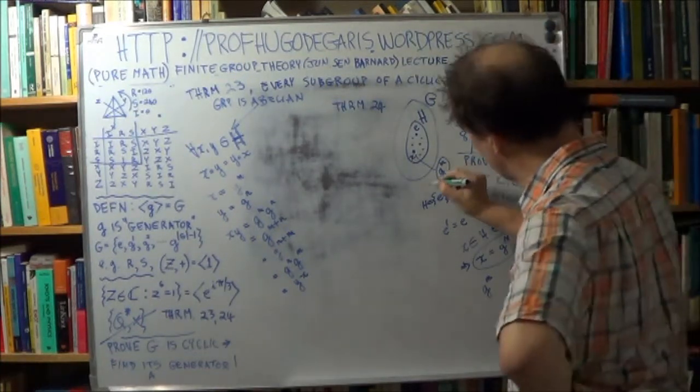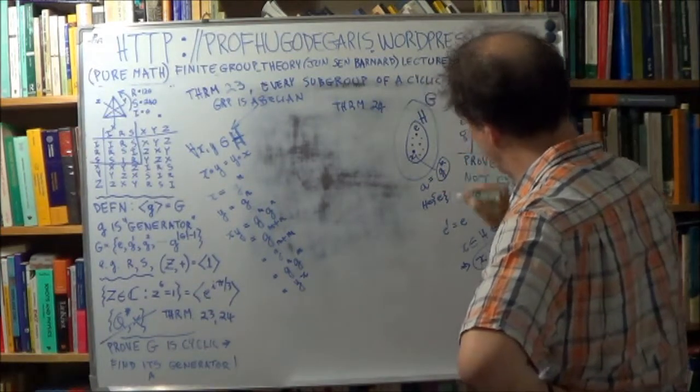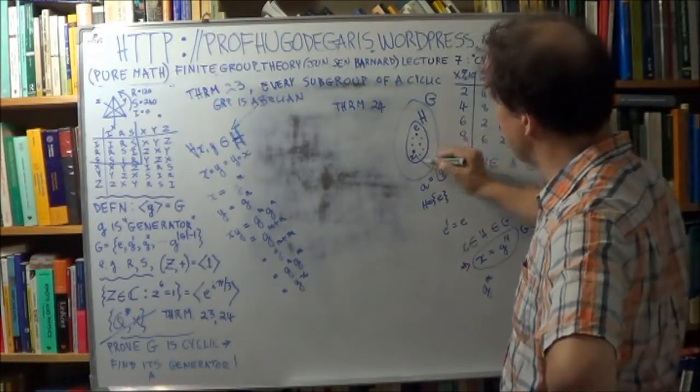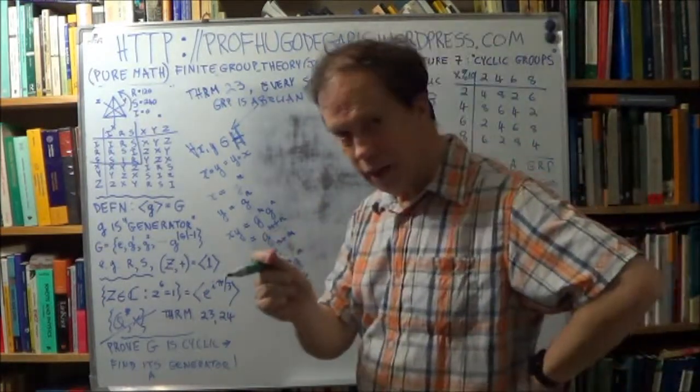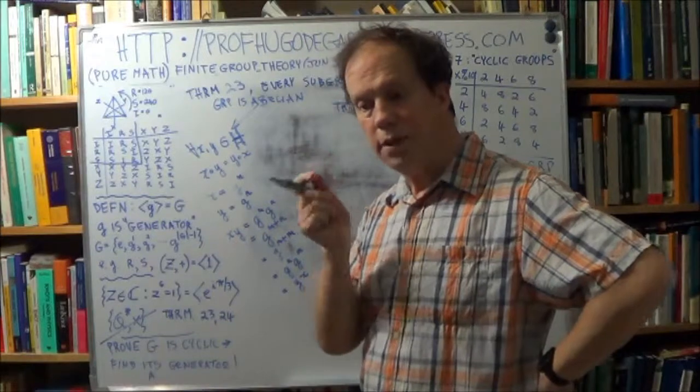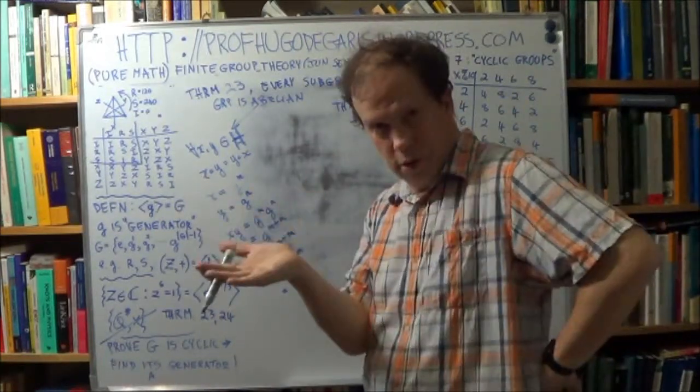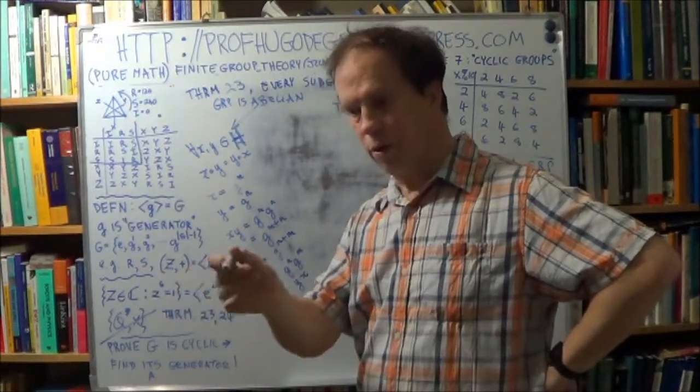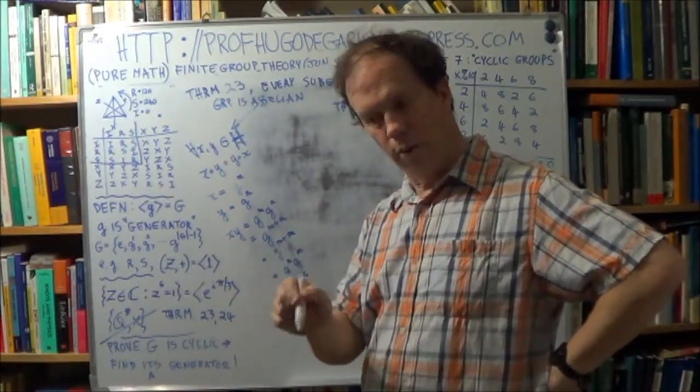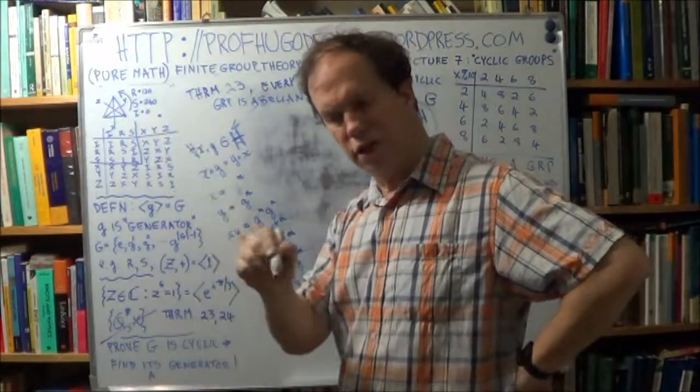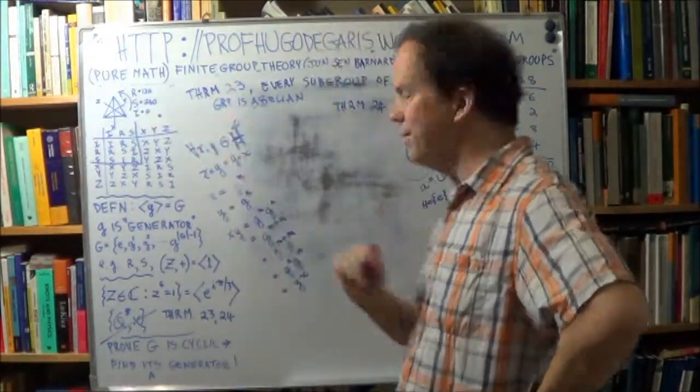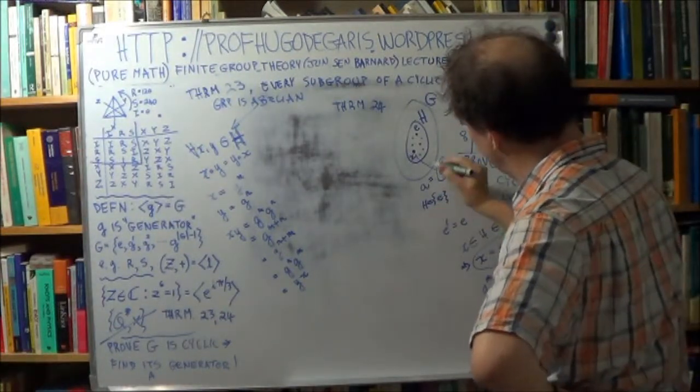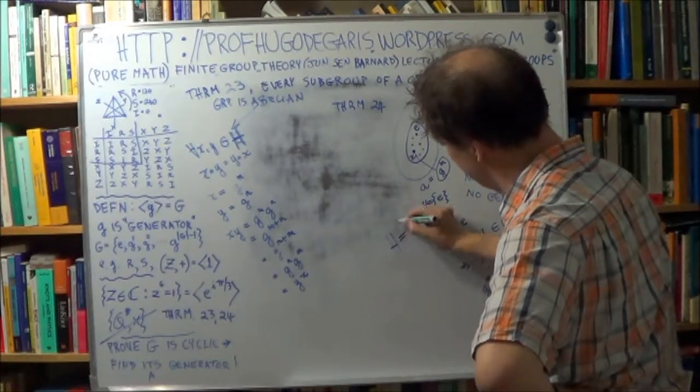So let's just call this A. So A. Now, if this subgroup H is cyclic, by definition, it means it has a generator, right? That's what a cyclic group is, it has a generator. You can generate or create all members of your group from the generator, just by raising the generator to powers, integer powers, okay? So here's the hypothesis, that H, H equals, question right?